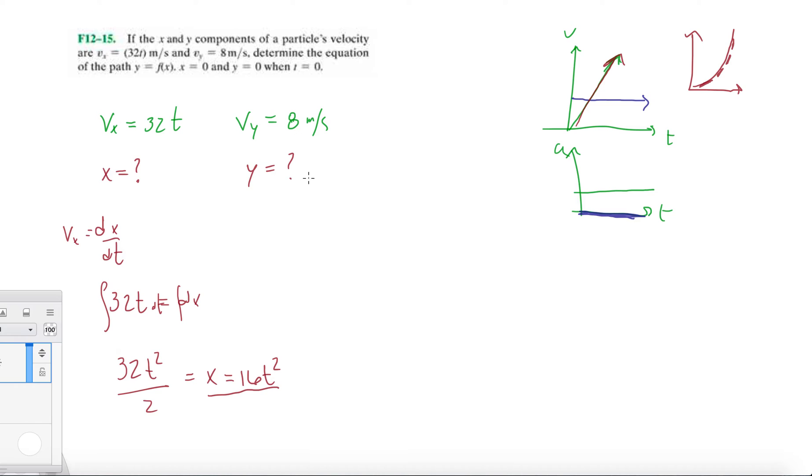And then what about for y? Well, for y, if we integrate once, we're just going to get a constant times the variable t. So we have vy equals dy/dt, and then 8dt equals dy, and then we have 8t equals y.